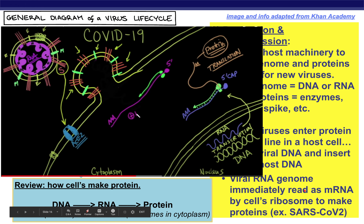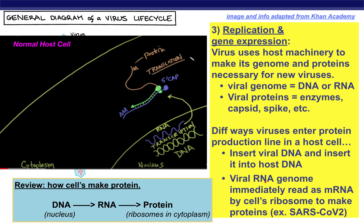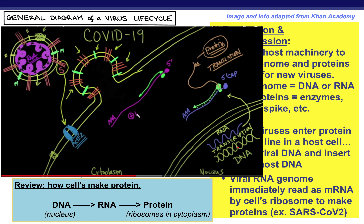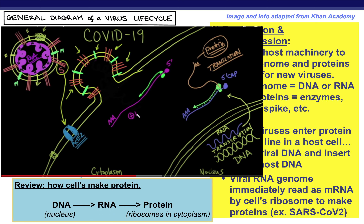For DNA-based viruses, what they do instead is sneak their DNA into the nucleus. The nucleus machinery that makes RNA will then start making viral RNA, send it into the cytoplasm, and the ribosomes make more viral proteins. So a DNA-based virus just sneaks a little bit earlier into the protein-making pathway.